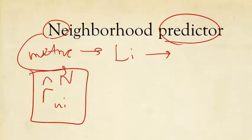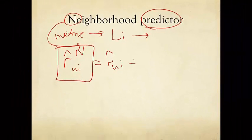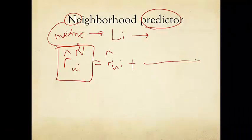So we want to find out what is r hat sub u i sup n. This is basically the original baseline predictor, now plus what we learn from these neighbors.